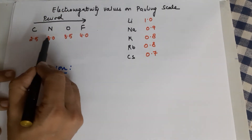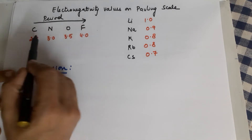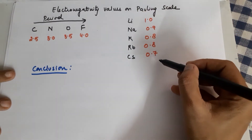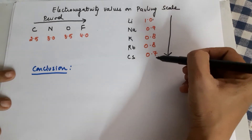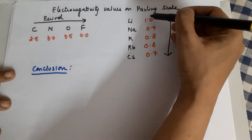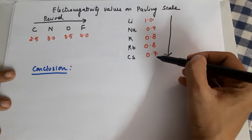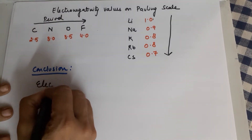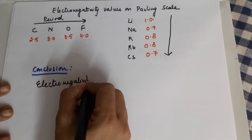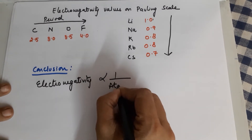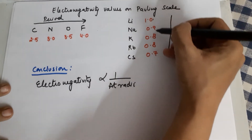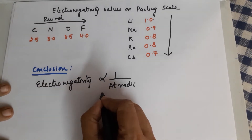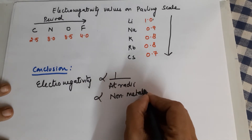As the non-metallic character increases going from left to right across a period, electronegativity increases. Whereas as you go down the group, size increases and metallic character increases, so the tendency to gain electrons decreases — hence electronegativity decreases down the group and increases across the period. The conclusion: electronegativity is inversely proportional to atomic radii and directly proportional to non-metallic character.